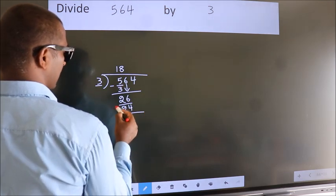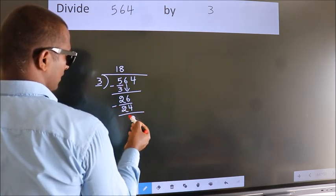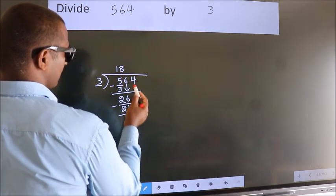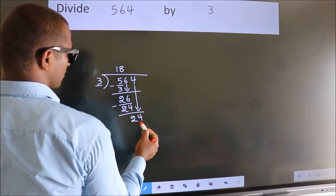Now, we subtract. We get 2. After this, bring down the beside number. So, 4 down. So, 24. When do we get 24?